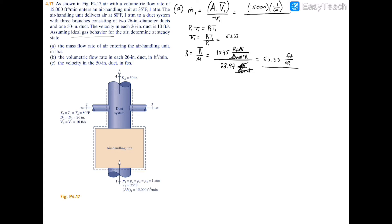The temperature is 35°F, so adding 460 gives 495°R. The pressure is 1 atmosphere = 14.7 psi, which converts to 2116.8 psf (pounds per square foot). Plugging into v1 = R·T1/p1 gives v1 = 12.47 ft³/lb. Dividing 15,000/60 by 12.47 yields the mass flow rate at duct 1 equal to 20.047 lb/s.